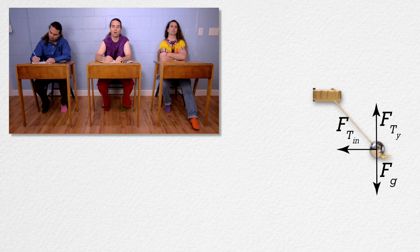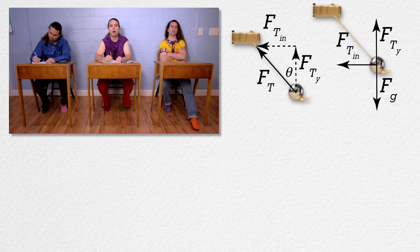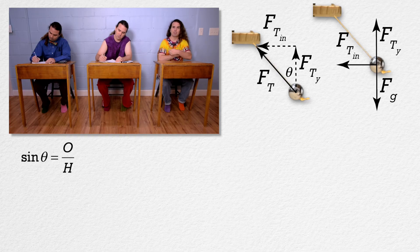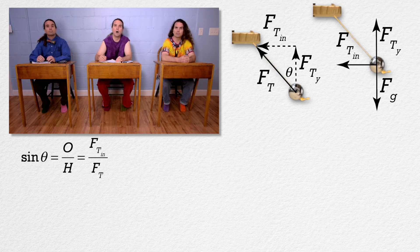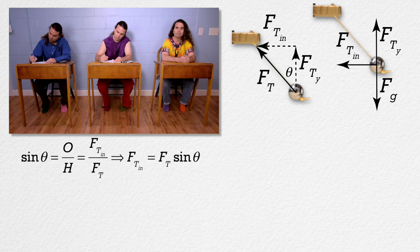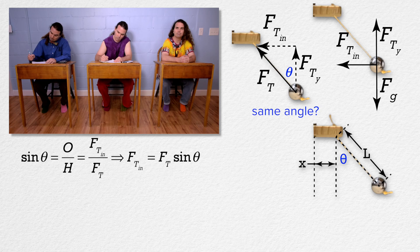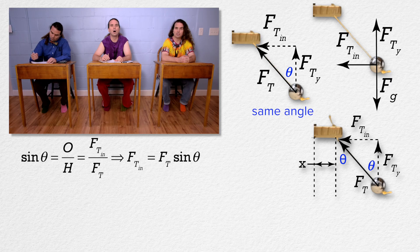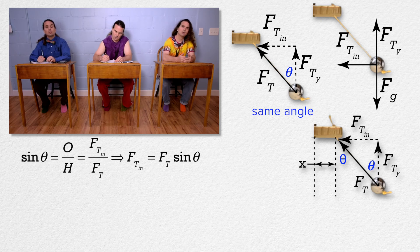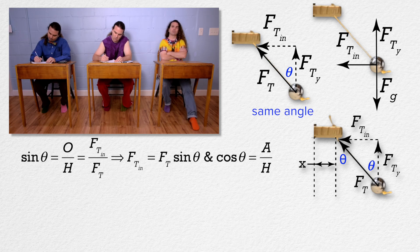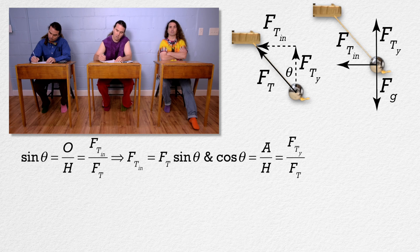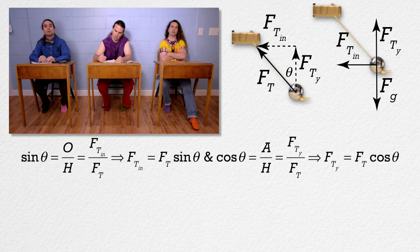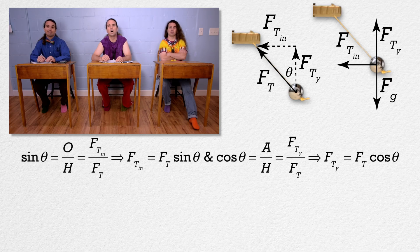Bo, please work on it from here. Sure. We need to draw the component vector diagram for the force of tension. We know sine theta equals opposite over hypotenuse, which equals force of tension in the inward direction over force of tension. Therefore, the force of tension in the inward direction equals force of tension times sine theta. Bo, how do you know the theta you are using is the same 43 degree angle shown in the figure? Because they are alternate interior angles, and alternate interior angles are equal when the two lines being crossed are parallel. Very nice, please keep going. We know cosine theta equals adjacent over hypotenuse, which equals force of tension y over force of tension. Therefore, the force of tension in the y-direction equals force of tension times cosine theta. We don't know the force of tension; however, we do not have a numbers dependency, so we can just leave those as equations.